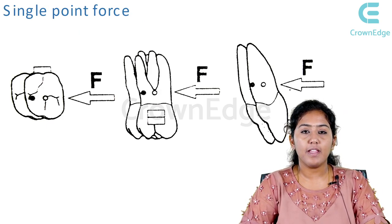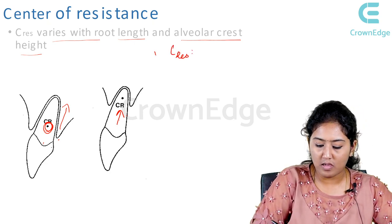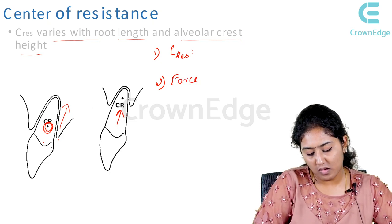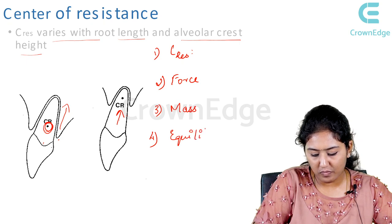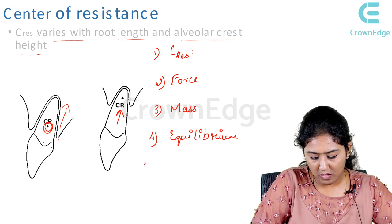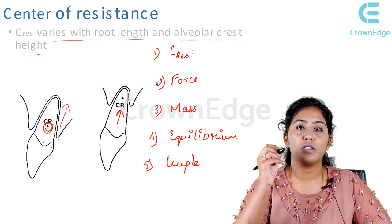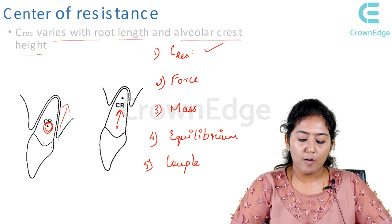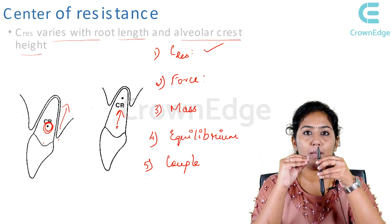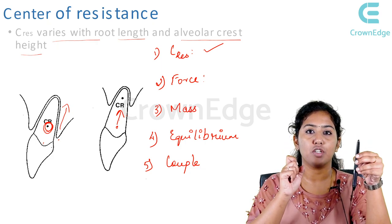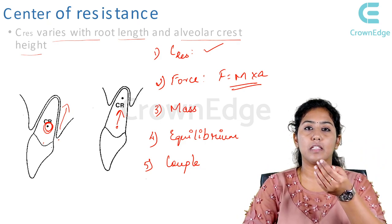Now let us discuss a few more terminologies. We have discussed center of resistance. The second one is force, mass, equilibrium, and couple. Force is whatever is needed when you want to move an object from one point to another — you apply some amount of force. The mass of the object multiplied by the acceleration is called your force: F equals mass times acceleration. Acceleration is the rate of change of displacement — for example, when this pen is getting displaced from one point to another, that rate is called acceleration.